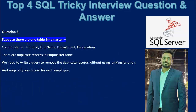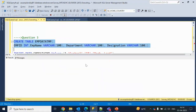Now the third question: suppose there is one table with four columns — employee ID, employee name, department, and designation — and it has duplicate records. We need to write a query to remove the duplicates without using any ranking function, so we cannot use ROW_NUMBER or RANK. Let me go into SSMS and write the query. First, let me create the table.